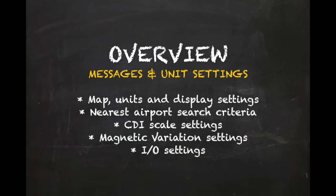The messages and unit settings allows users to customize various system preferences. These include map page settings for the built-in moving map display, various lighting and screen settings, nearest airport search criteria, CDI scale settings, magnetic variation, and input-output settings.